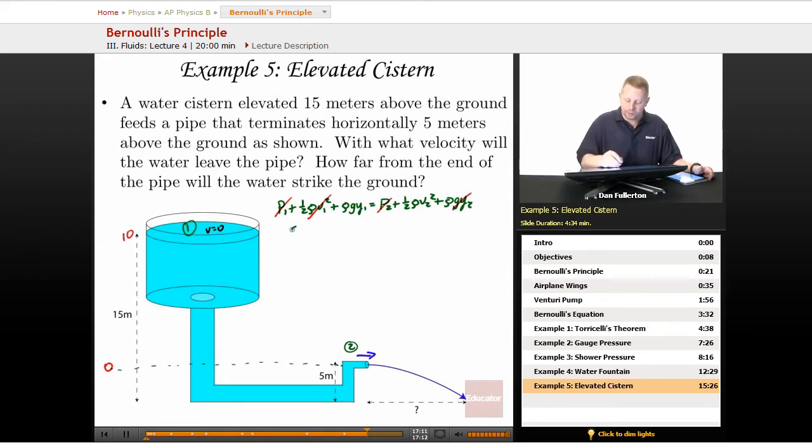So we've simplified Bernoulli's equation to say that rho g y1 equals one half rho v2 squared. Or as we substitute in our values, oh first off we can get rid of rho out of both sides.